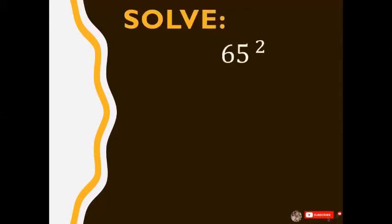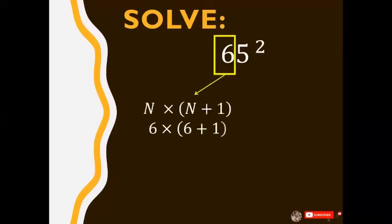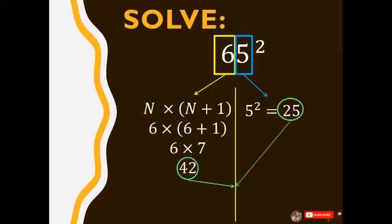And another, 65 squared in 5 seconds. So we get, on the first side we have 42 and second 25, so that's 4225.